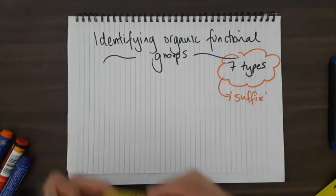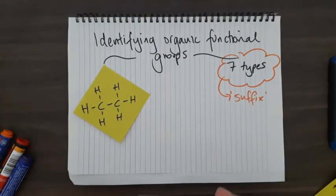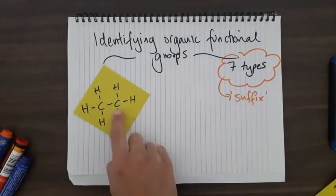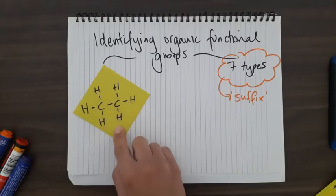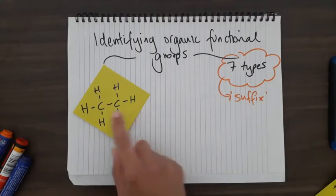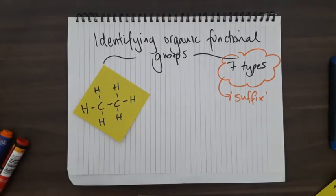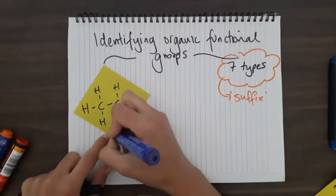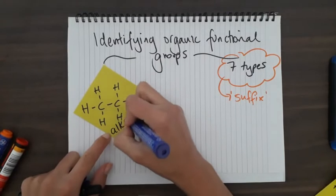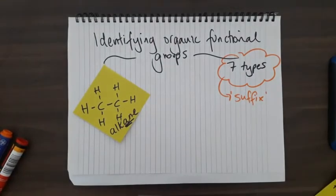The first one we have here is most simple - there are carbons, hydrogens, and nothing else. Some people call this a hydrocarbon, but specifically everything here has single bonds. Anytime you see plain carbons and hydrogens, that's an alkane. Every time you're naming an alkane, it's always going to end in -ane.